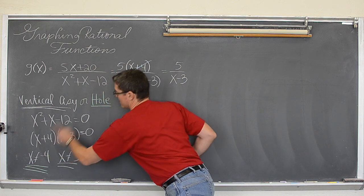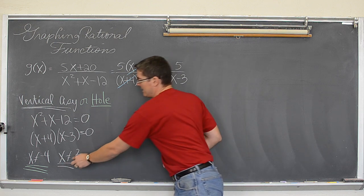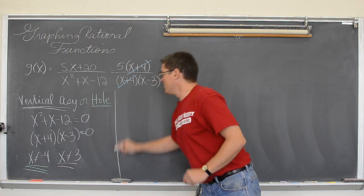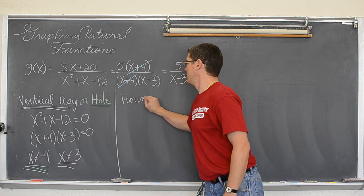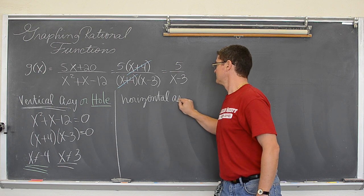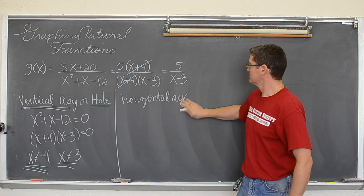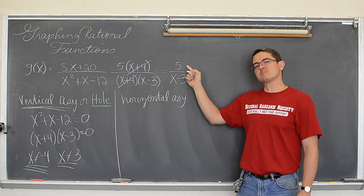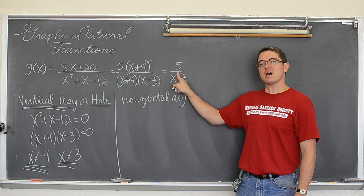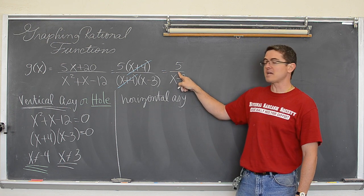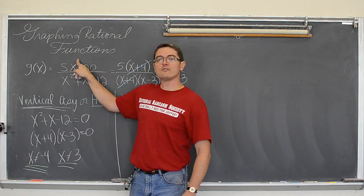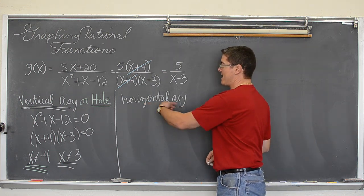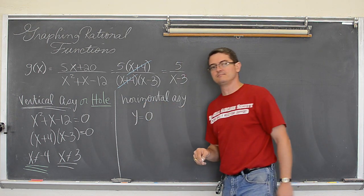So at x equals 3 we are going to have that vertical asymptote that I was looking for. So hopefully you can see the colors here. x equals negative 4 is a hole. And x equals 3 is going to be my vertical asymptote. Let's take a look at horizontal asymptotes. When the numerator's degree is smaller than the denominator's degree, if your bottom degree is larger than your top degree, then your horizontal asymptote is going to be y equals zero.